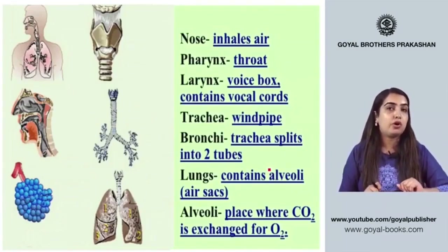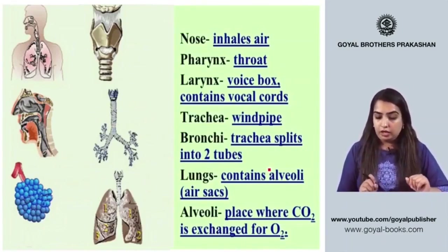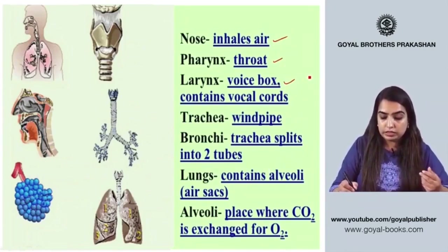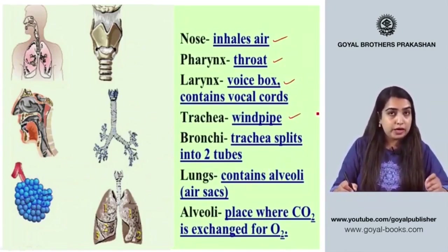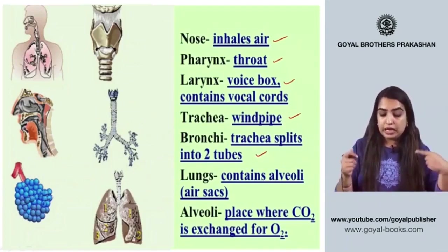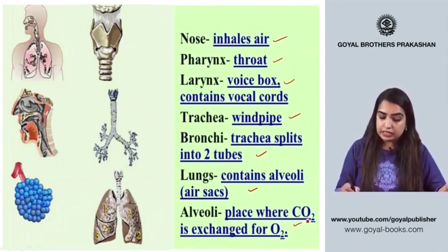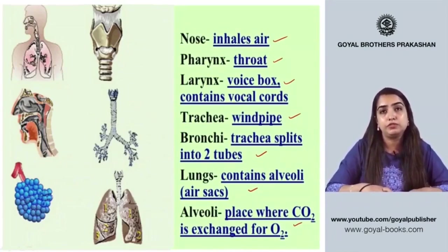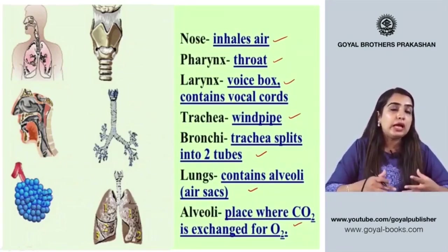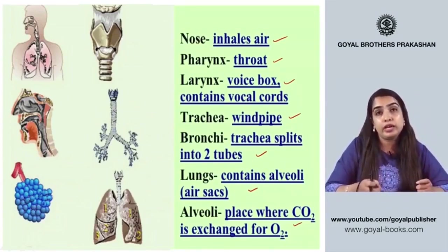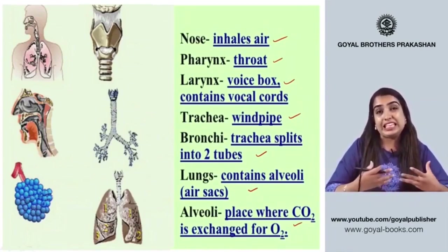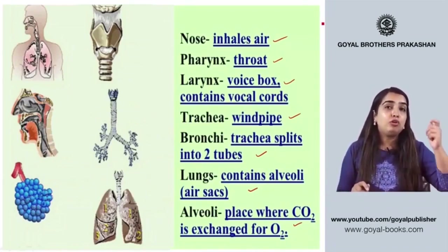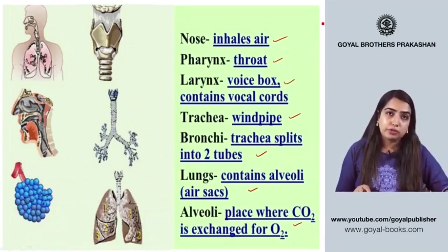Different parts of the respiratory system: the nose inhales air; the pharynx is the throat; the larynx is the voice box containing vocal cords; the trachea is the windpipe; the bronchi are the two tubes the trachea splits into; and the lungs contain alveoli — the air sacs where the exchange of oxygen and carbon dioxide takes place.